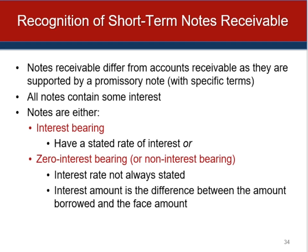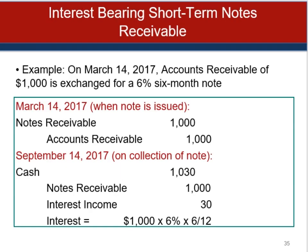The major differences between trade accounts receivable and trade notes receivable are that notes represent a formal promise to pay and bear an interest element because of the time value of money. Notes may be classified as interest-bearing or non-interest-bearing. Interest-bearing notes have a stated rate of interest, whereas non-interest-bearing notes include the interest as part of their face amount instead of stating it explicitly. If financial statements are prepared while a note is outstanding, interest would be accrued at the balance sheet date for both interest-bearing and non-interest-bearing notes.